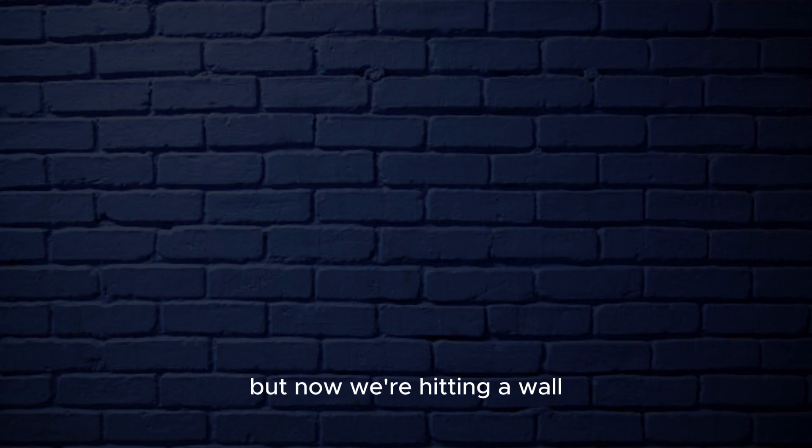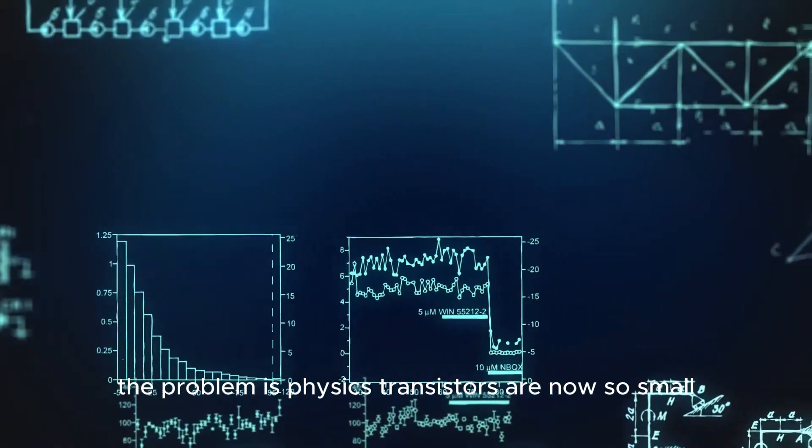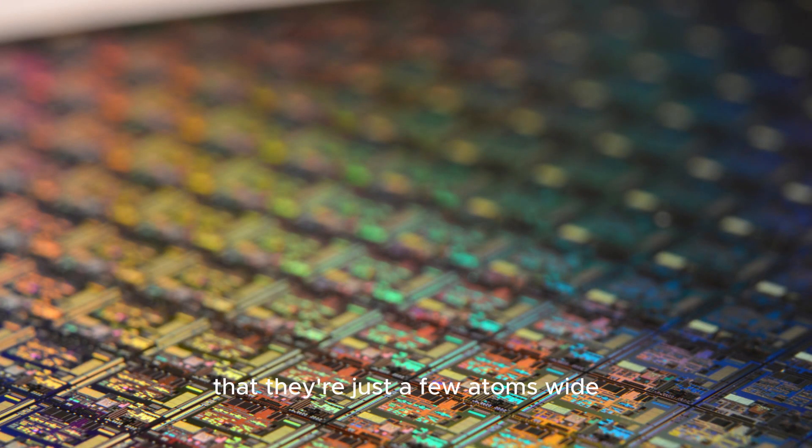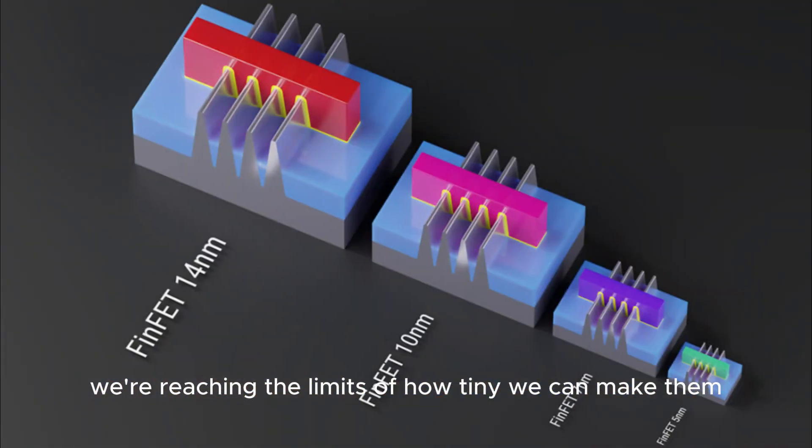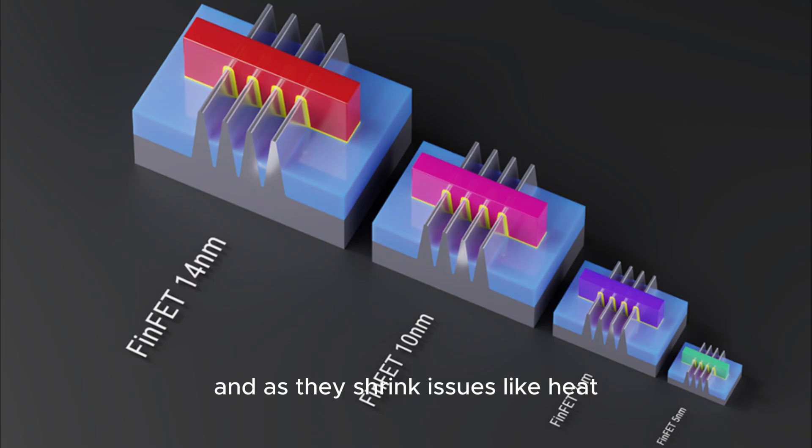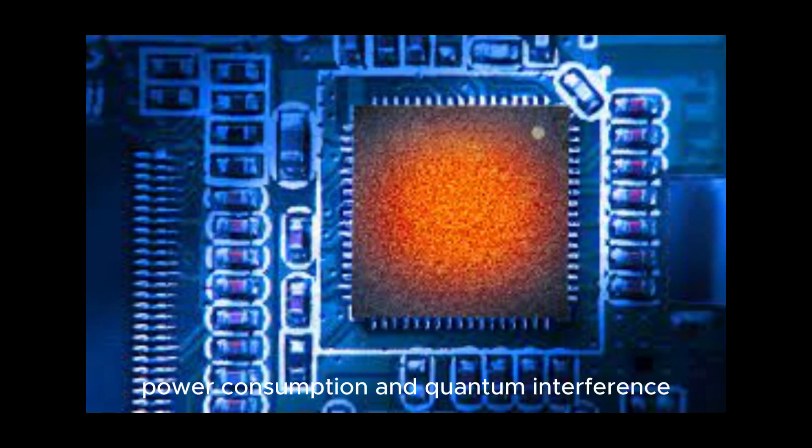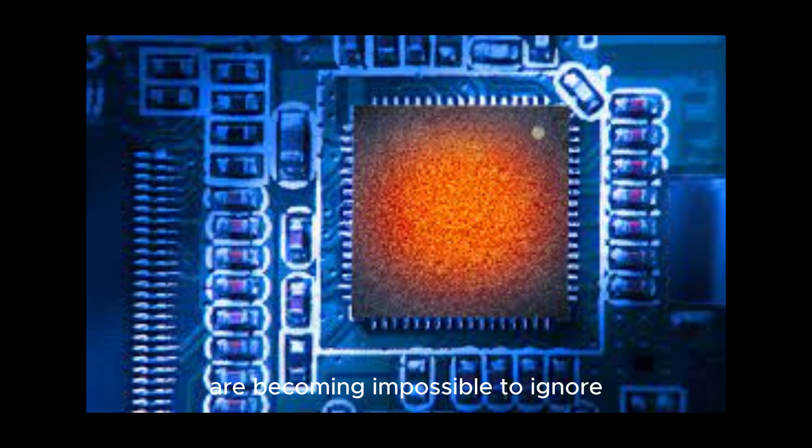But now, we're hitting a wall. The problem is physics. Transistors are now so small that they're just a few atoms wide. We're reaching the limits of how tiny we can make them. And as they shrink, issues like heat, power consumption, and quantum interference are becoming impossible to ignore.